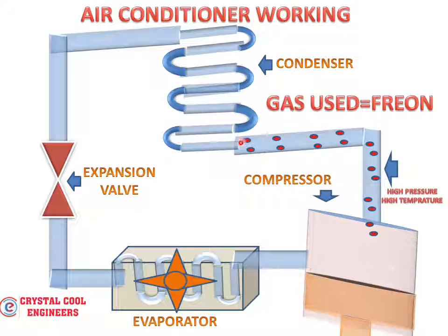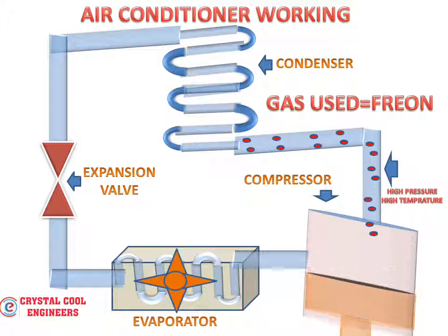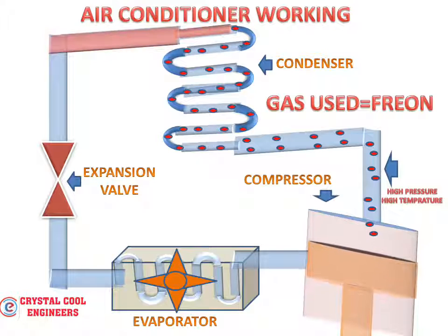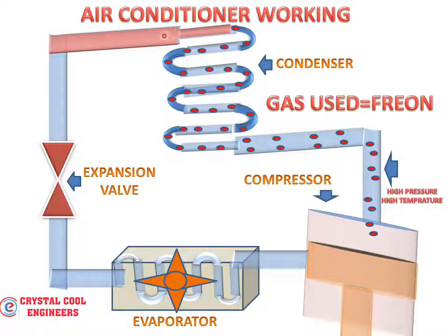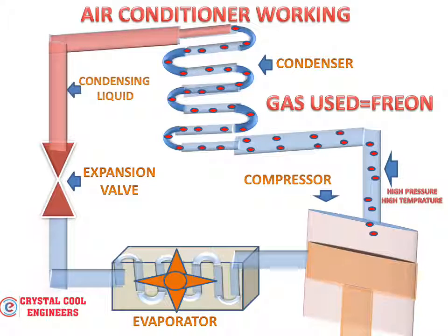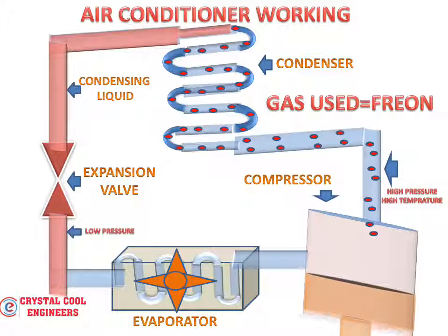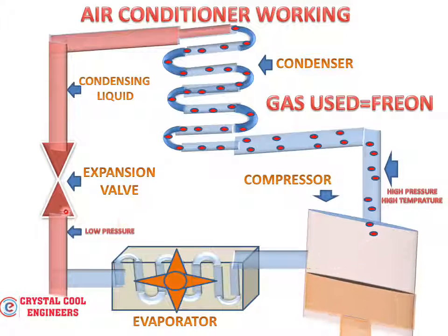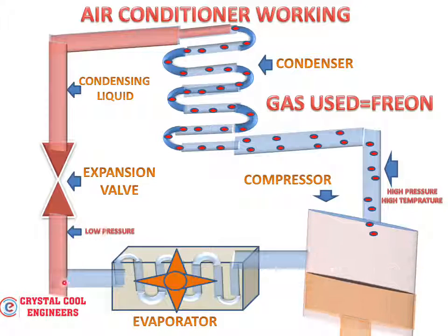At the condenser, the gas will change its phase into liquid form at the same temperature. This condensed liquid will then go to the expansion valve, which will lower the pressure of the liquid, producing a cooling effect.